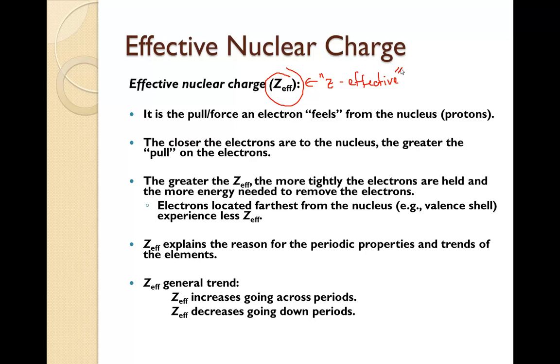The greater the Z effective, the more tightly the electrons are held and the more energy needed to remove those electrons. Electrons located farthest from the nucleus, which are the valence shell electrons, experience the least amount of Z effective of that atom.